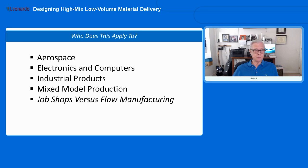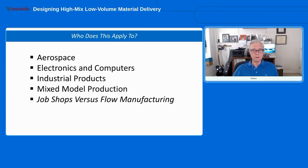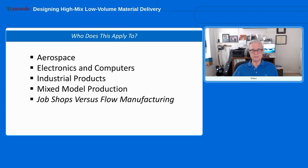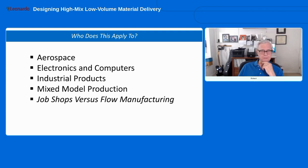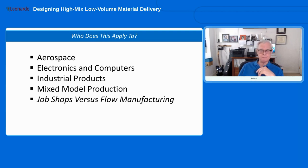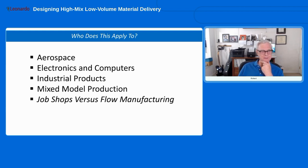In terms of industries, aerospace is very low volume — we don't build that many airplanes, but a typical commercial airliner has around 40,000 different components. Electronics and computers, industrial products, air conditioners, electric motors, pumps, valves — there's a lot of variety in mixed model production in general. We're not putting any limits on who could fit into that category.